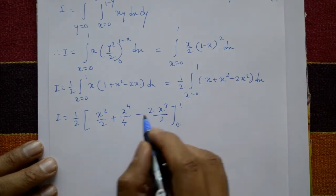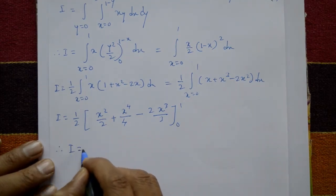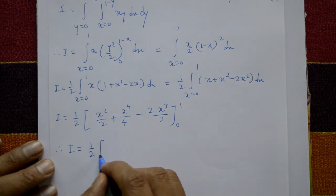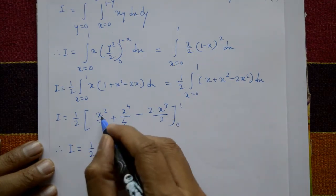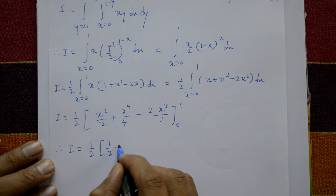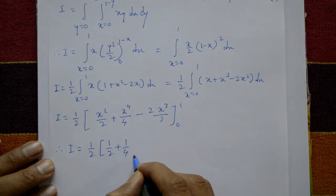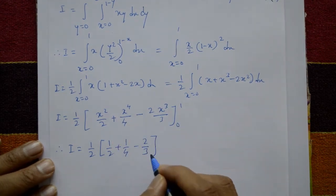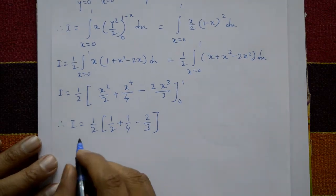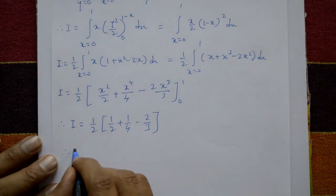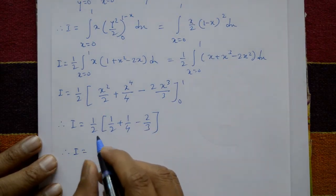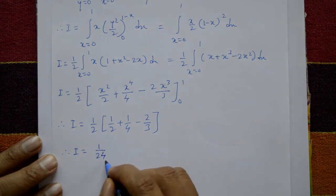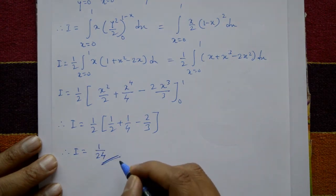Therefore I equals 1/2. Putting in upper limit x = 1: 1/2 plus 1/4 minus 2/3. Lower limit gives 0. Simplifying, I equals 1/24. This is the required solution.